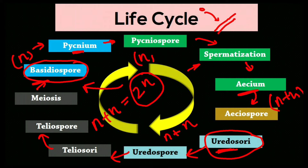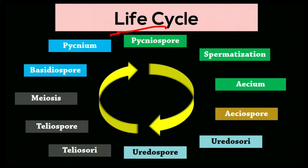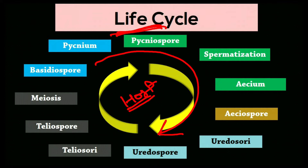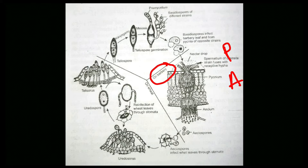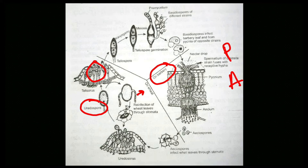Disease cycle is different from life cycle — if we add the host factor to the fungal life cycle, it becomes the disease cycle. In the disease cycle of black rust (Puccinia graminis tritici), pycniospores and aeciospores are formed on barberry — the alternate host — while uredospores and teliospores are formed on wheat — the main host. Basidiospores form on teliospores.